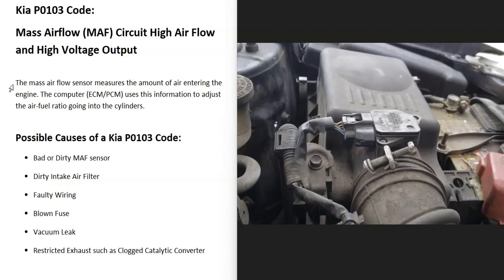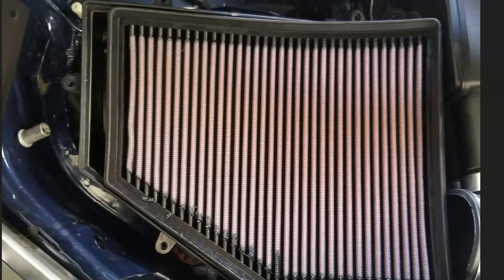The onboard computer has seen a problem, so it needs troubleshooting. Some possible causes include a bad or dirty MAF sensor, a dirty intake air filter, wiring issues, a blown fuse, a vacuum leak, or a restricted exhaust like a clogged catalytic converter. Usually when the exhaust is the issue, you'll get other codes as well, so pay attention to any additional codes you're seeing.